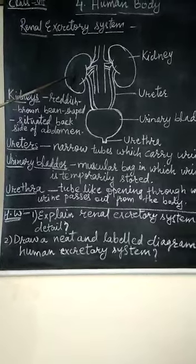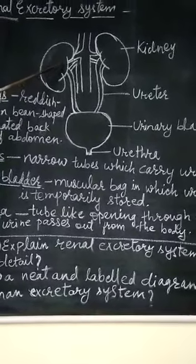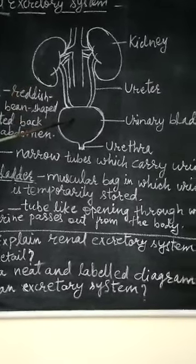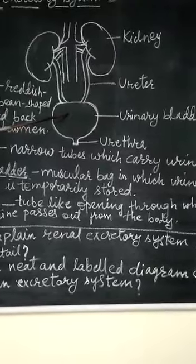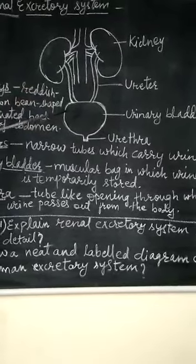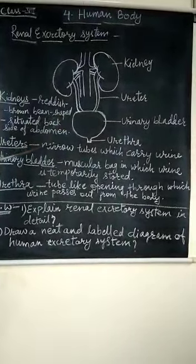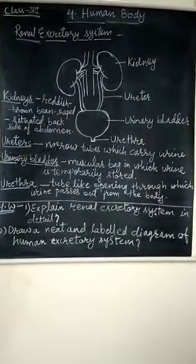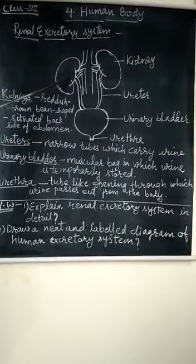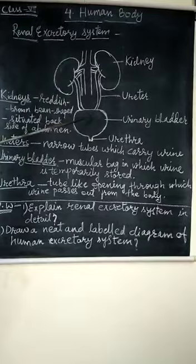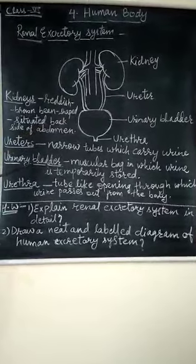The next is the ureter. It is a narrow, tube-like structure which emerges from inside the kidney and connects it to the urinary bladder. The main function of the ureter is to pass urine from the kidney — it helps in the passage of urine from the kidney to the bladder.